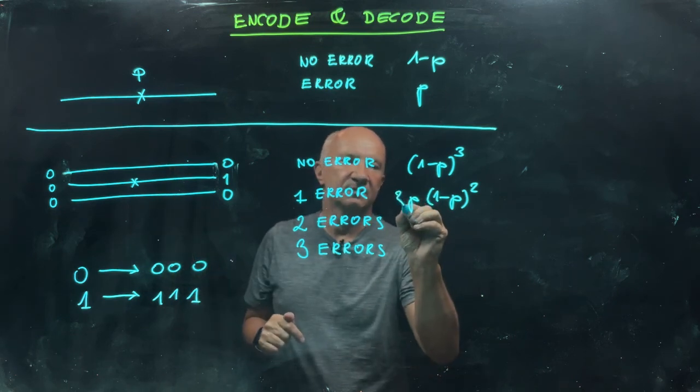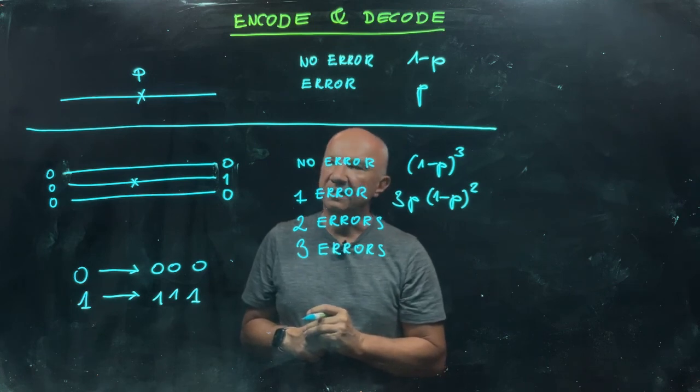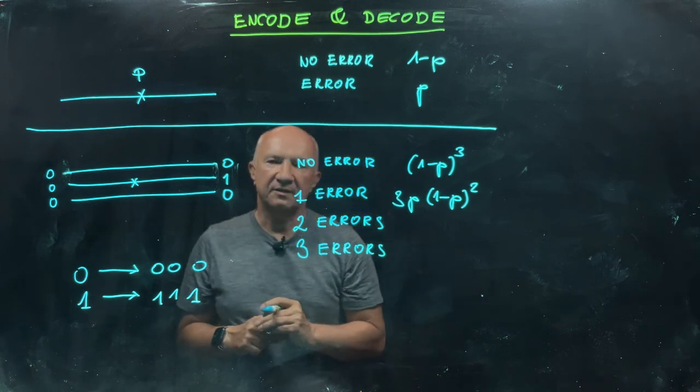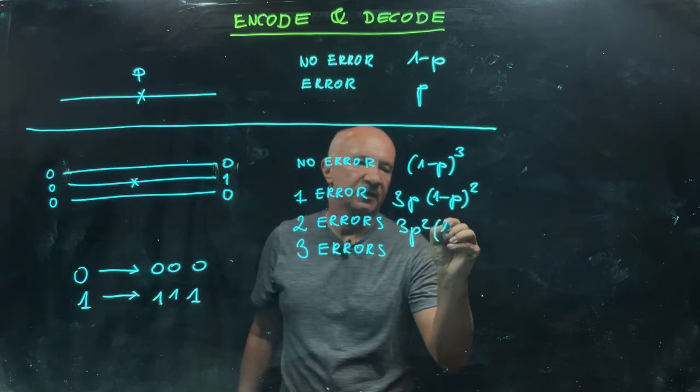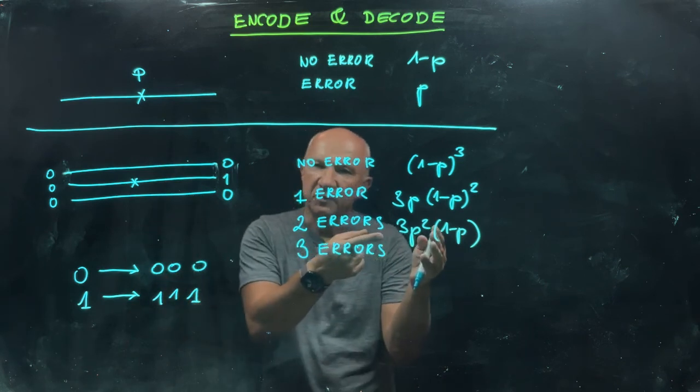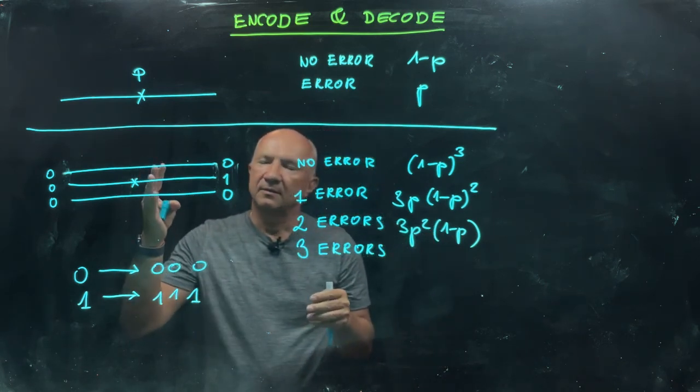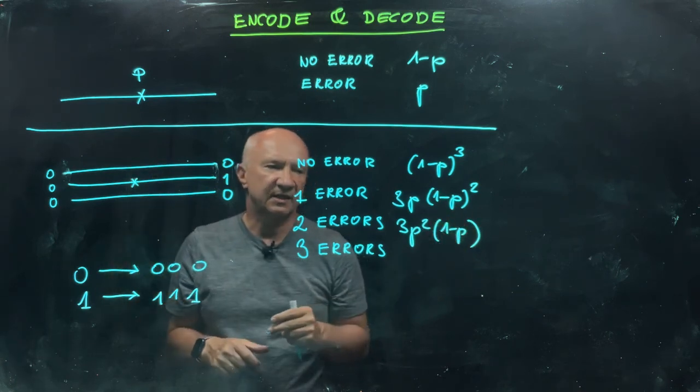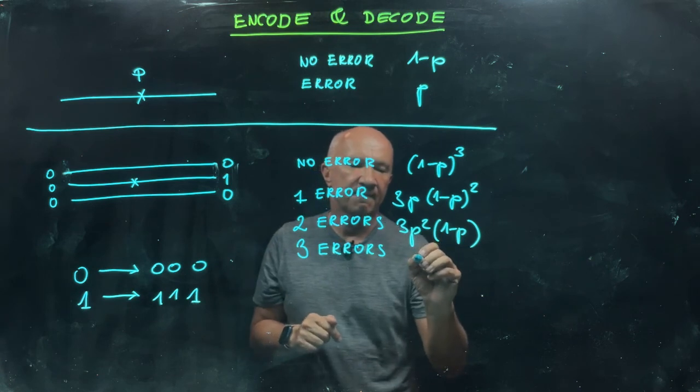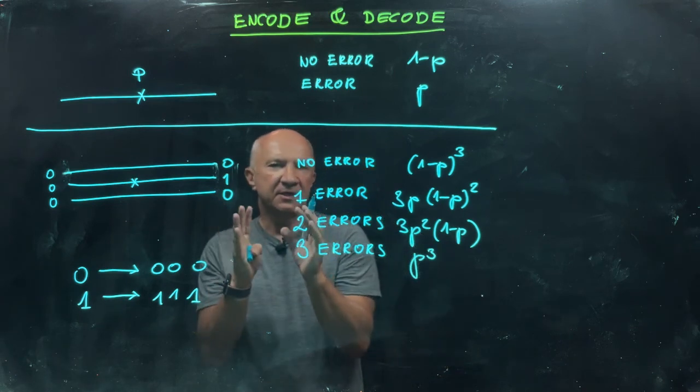For two errors, this will be equal to 3p²(1-p). Two errors happen with probability p², and the other bit is not affected, that's why we have the (1-p) factor. That can happen in three different ways. Three errors can happen with probability p³.